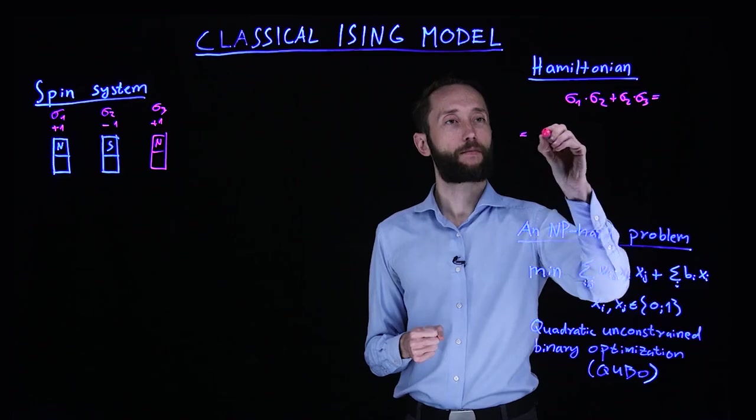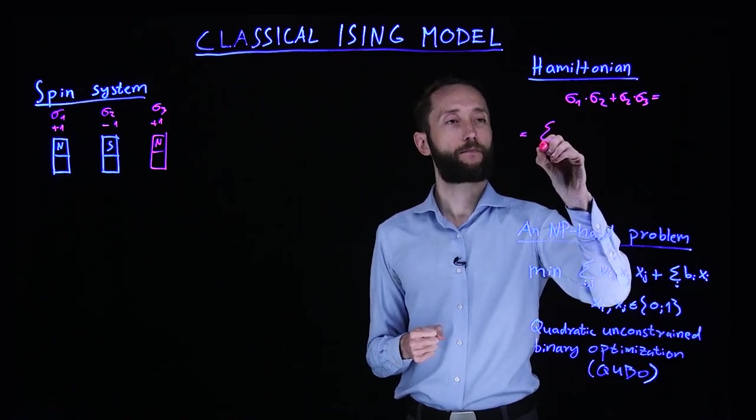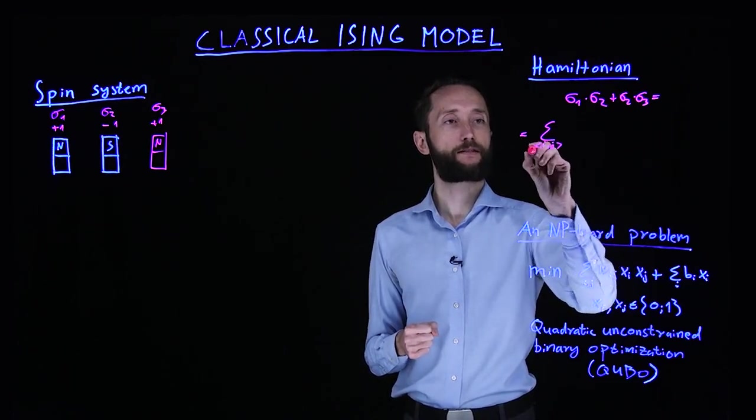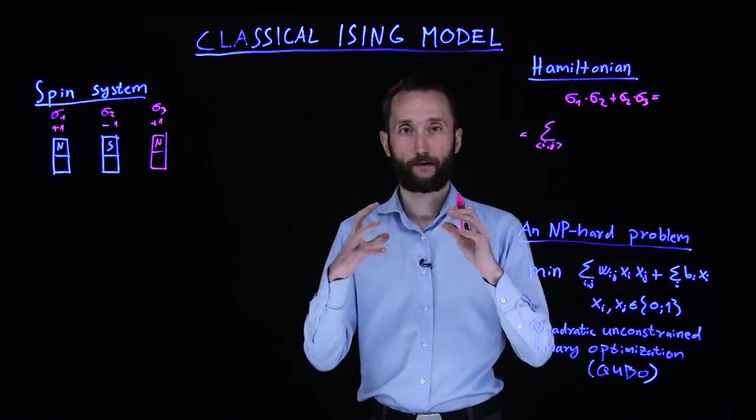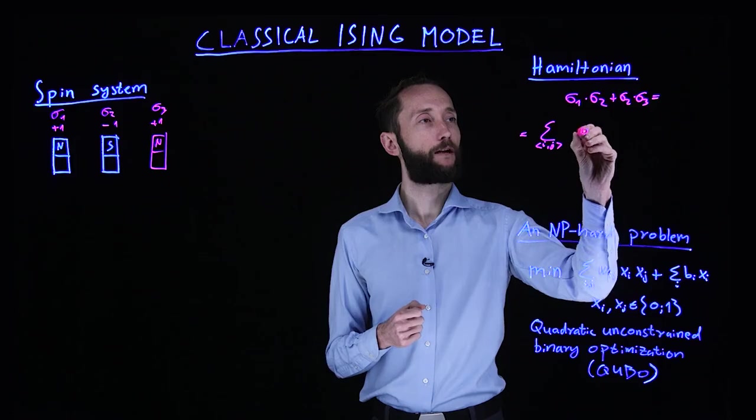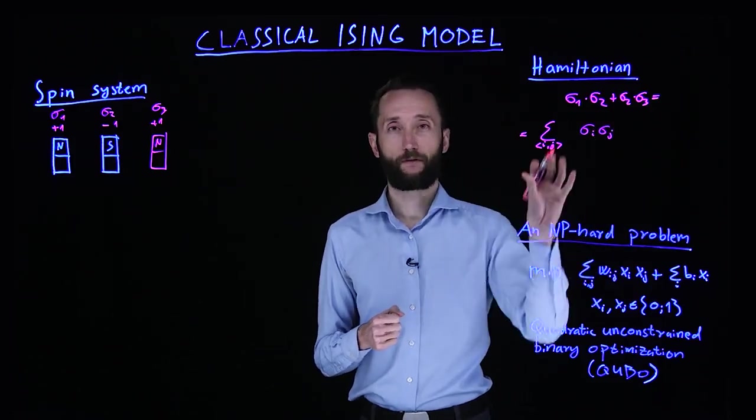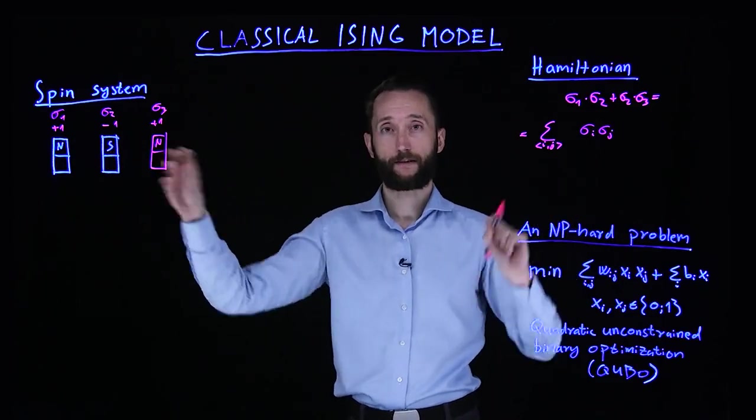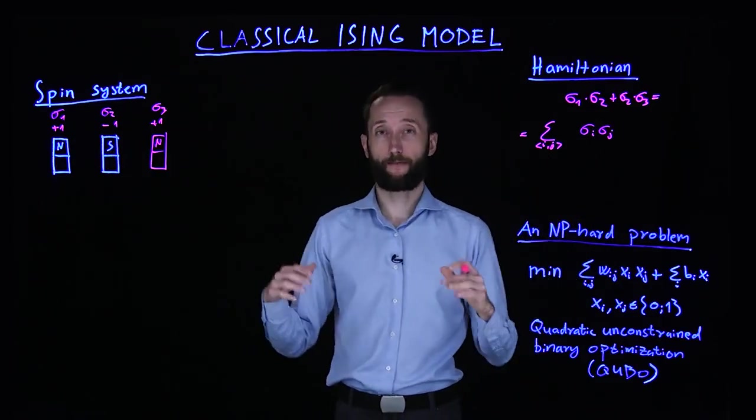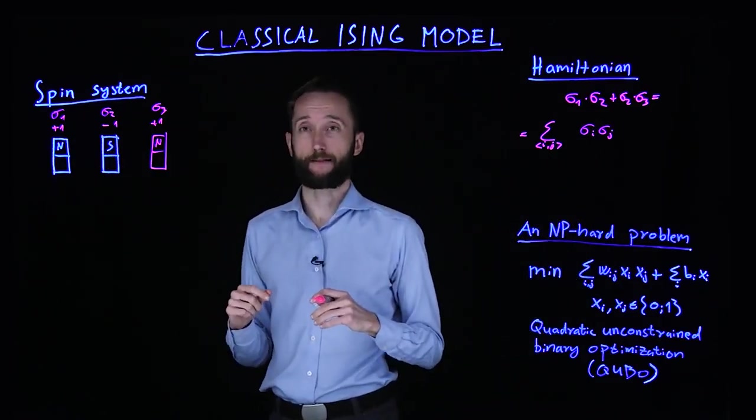And we can write it as a sum over nearest neighbors. So this notation stands for nearest neighbors. And we are going to have sigma i, sigma j. So this term describes the energy of this system. And we want to minimize it. Well, nature naturally minimizes it.